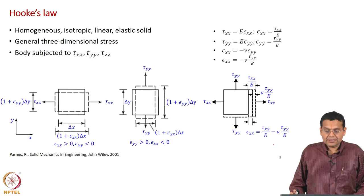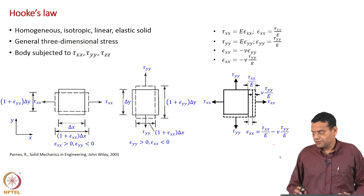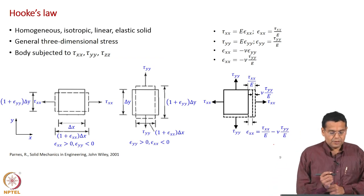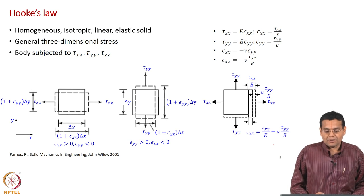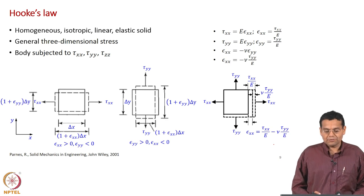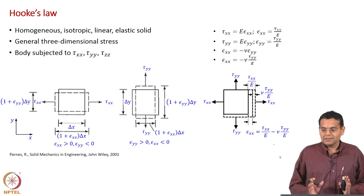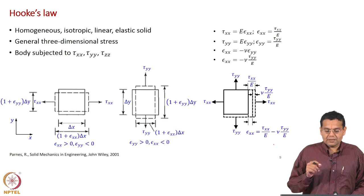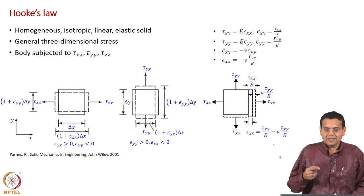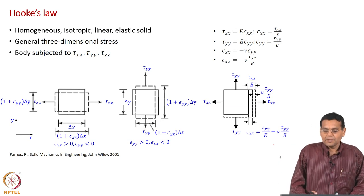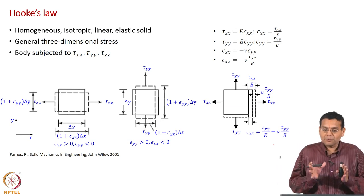We will start deriving Hooke's law. The first bullet lists all the assumptions we have discussed so far — it summarizes them. Hooke's law is valid only under these assumptions. That is why, when we talk of a relationship between stress and strain, assumptions have to be discussed. Hooke's law is such a relationship, and this limits the scope of Hooke's law.